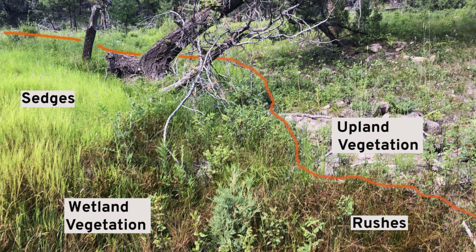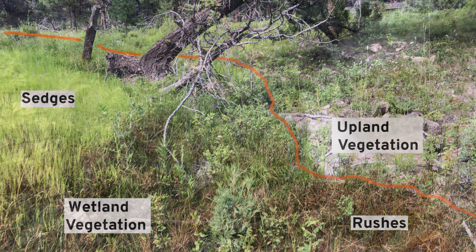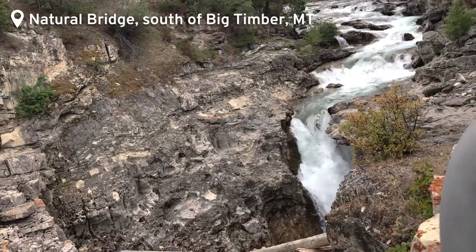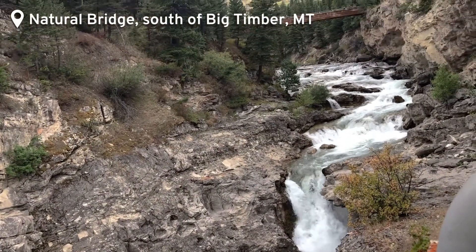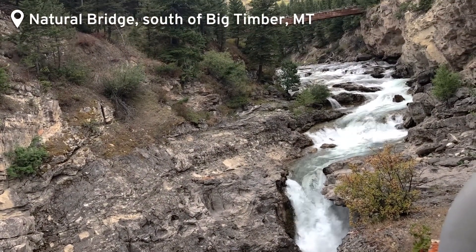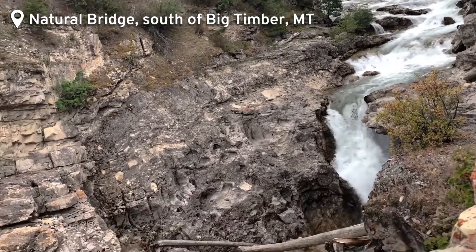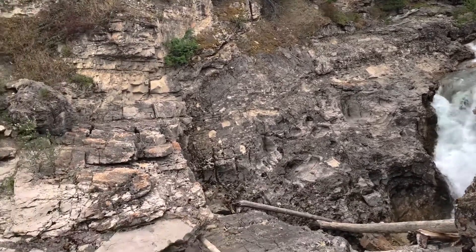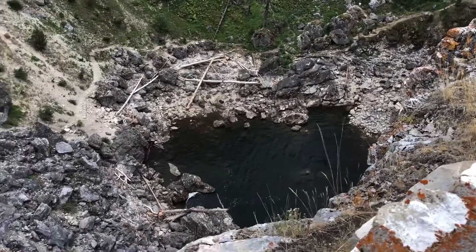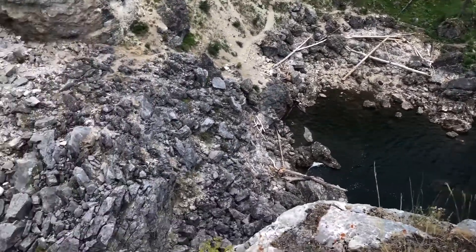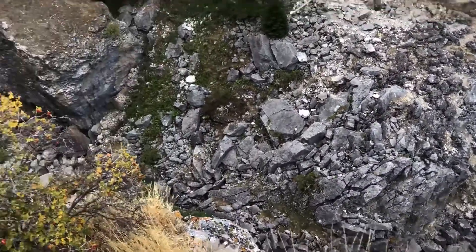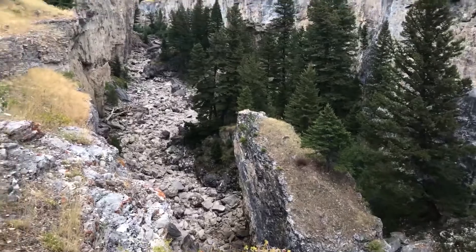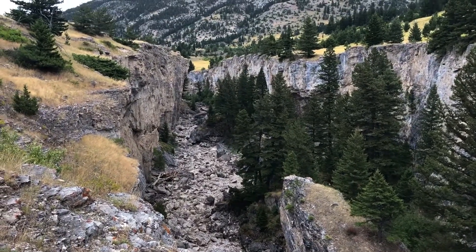Down below are lush green sedges and rushes. Vegetation coverage is an excellent indicator for the presence of groundwater. South of Big Timber at Natural Bridge, the Boulder River runs over and through the limestone. Cavernous limestone is called karst. We see the limestone riverbed, then the river is gone — flowing underground. It reemerges a little further from the limestone cliff, only to disappear once again, leaving a dry, canyonized riverbed with trees growing inside.